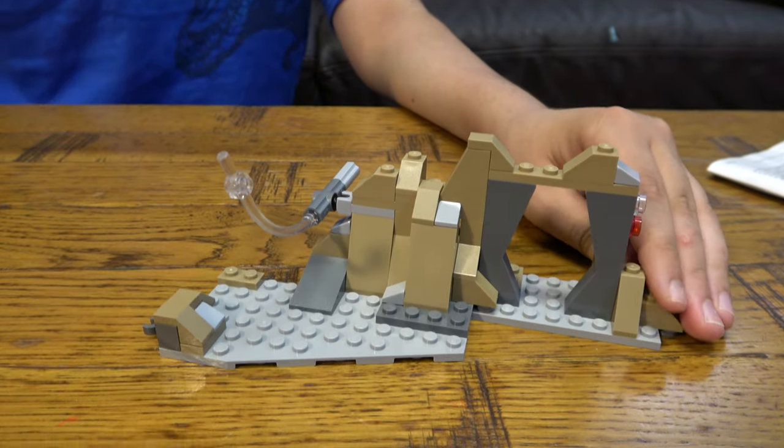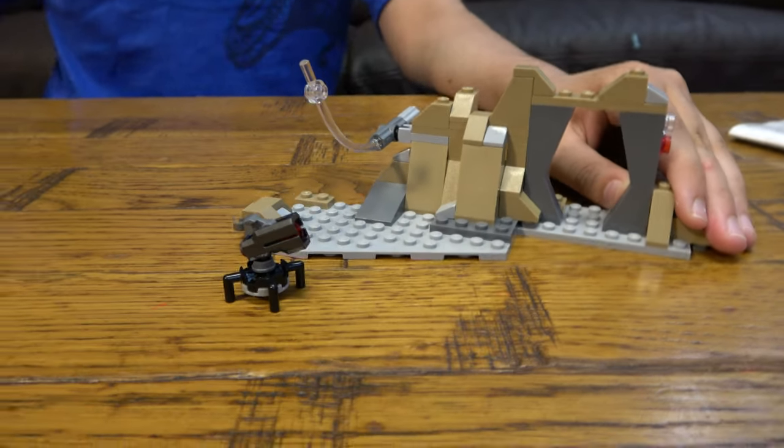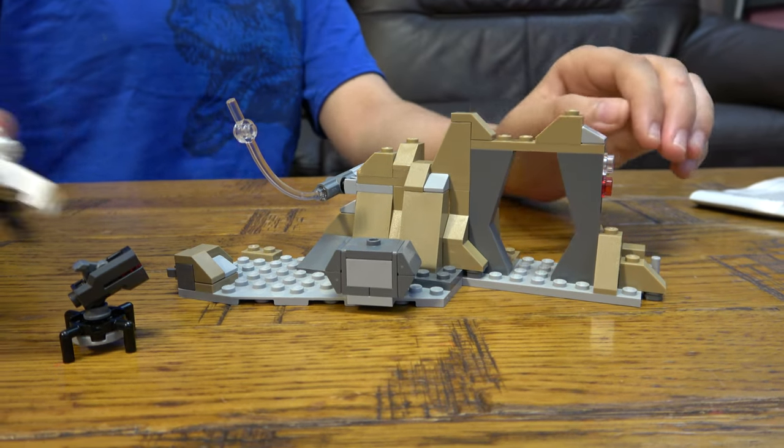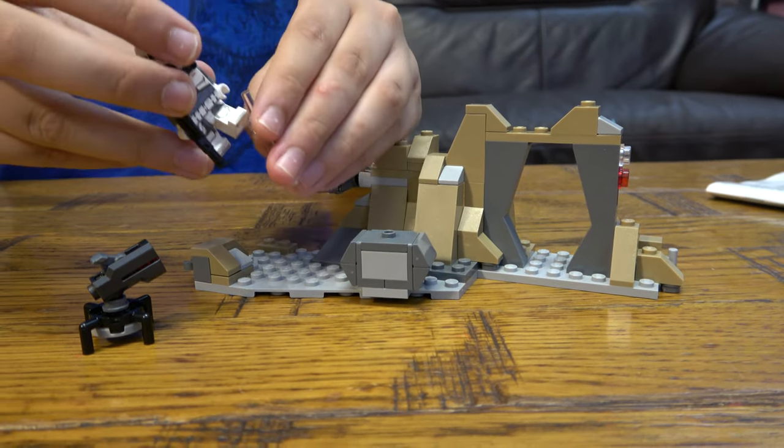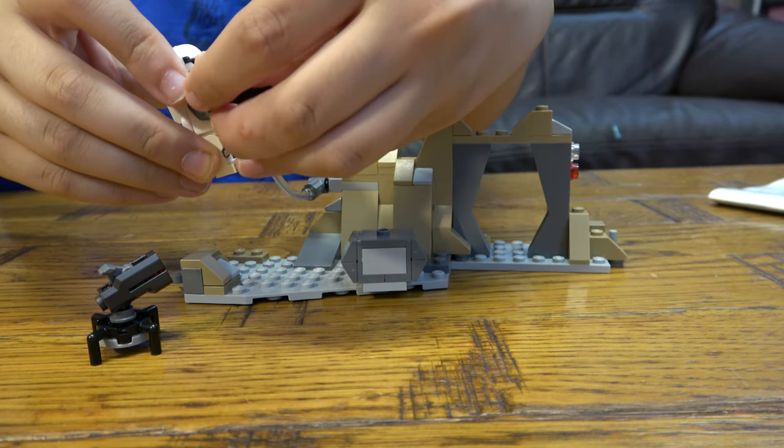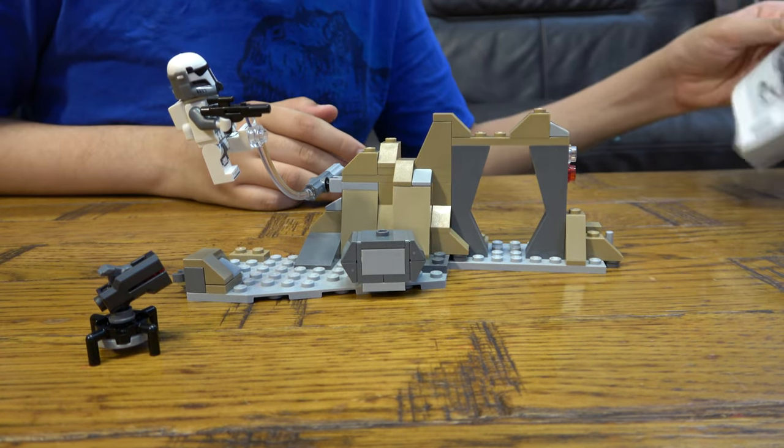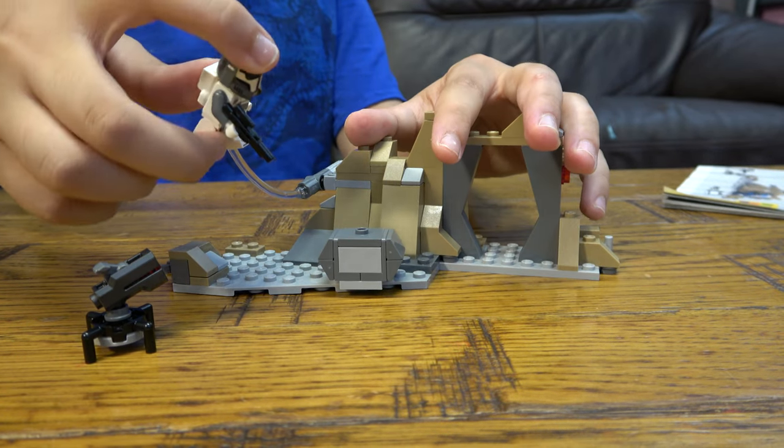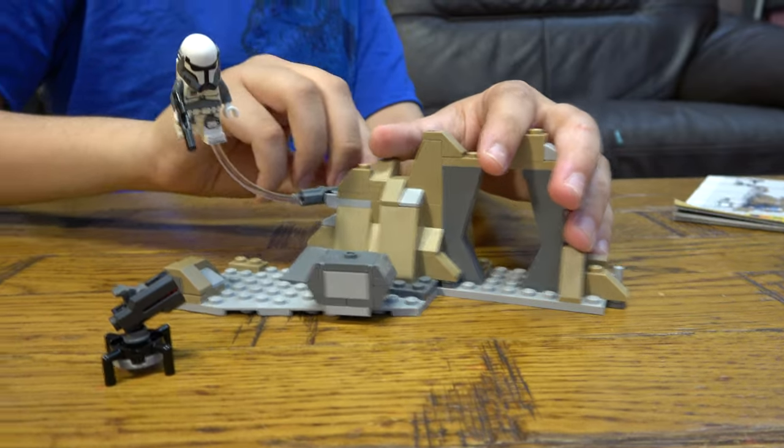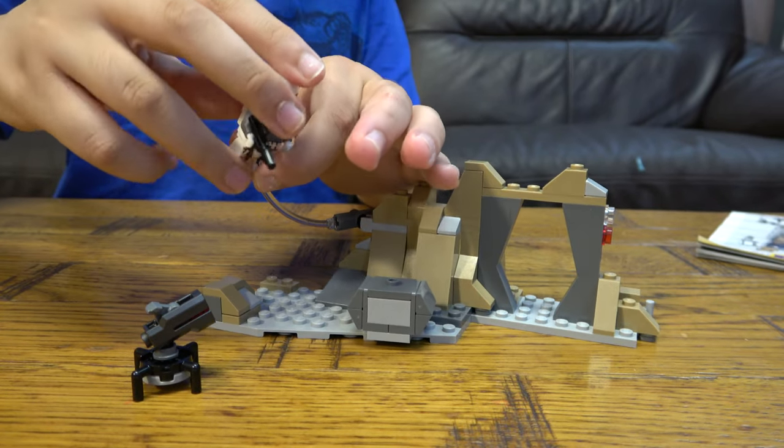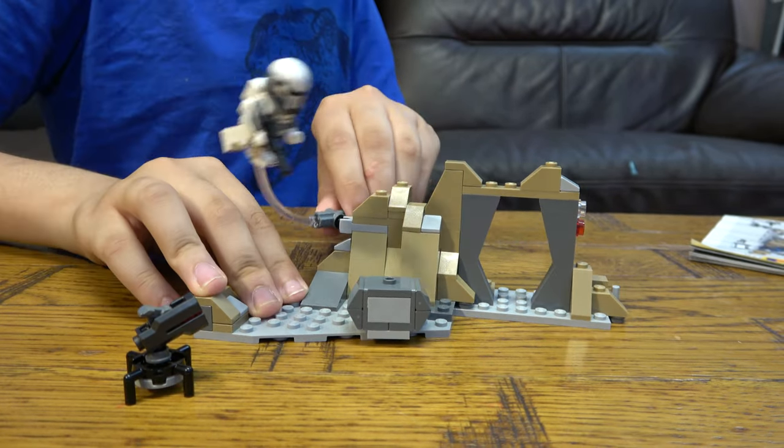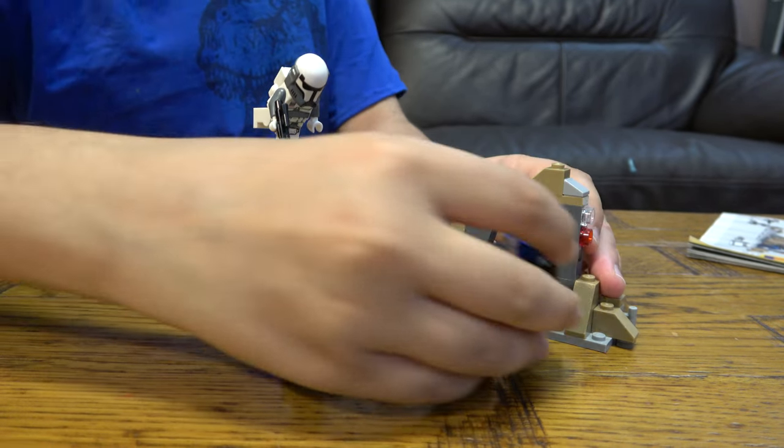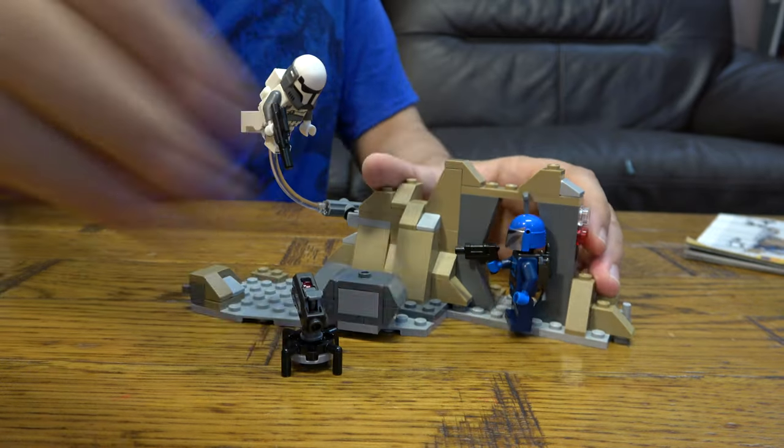So the cool thing about this is that you get your container here and your gun, and then because all the minifigures have a jetpack, you can make them look like they're flying by doing it like that. And you can move them into a way that looks like they're flying, like that.